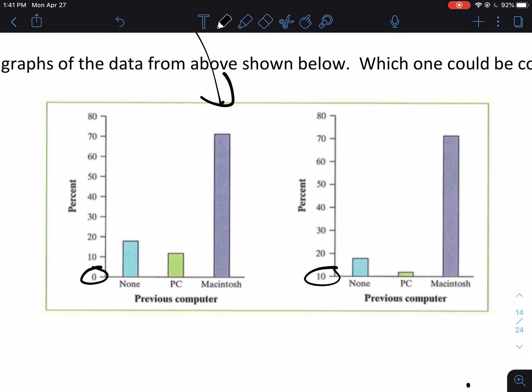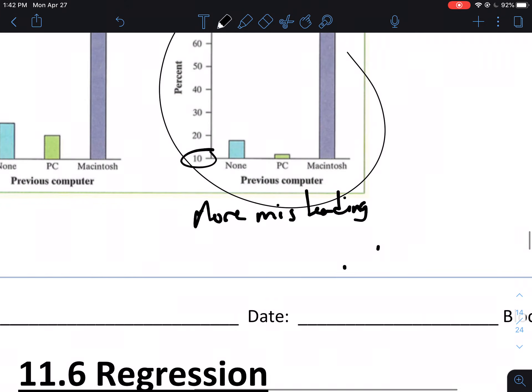So while it looks like on the graph on the right, the PC is very low, which it is, but it's more than 10, and you can see how much more clear that is over here on this graph on the left. So I would say the graph on the right is more misleading. And I would say the reason for that, I'm going to use the technical term, which is that it's been truncated. And remember, truncated just means that it did not start at 0.